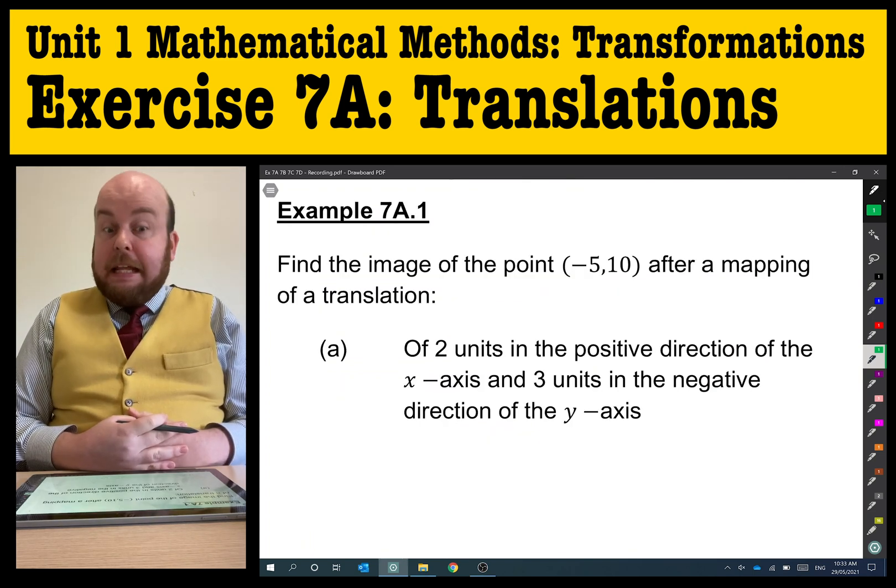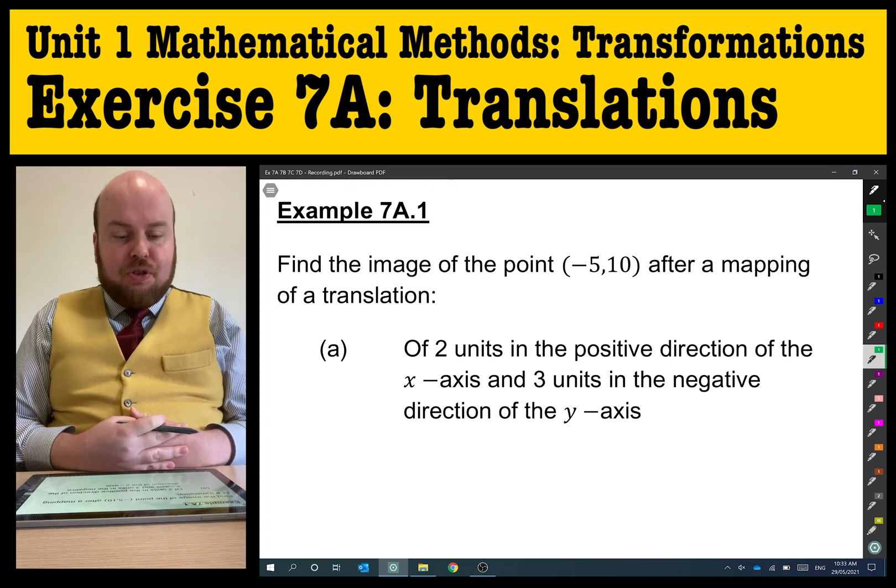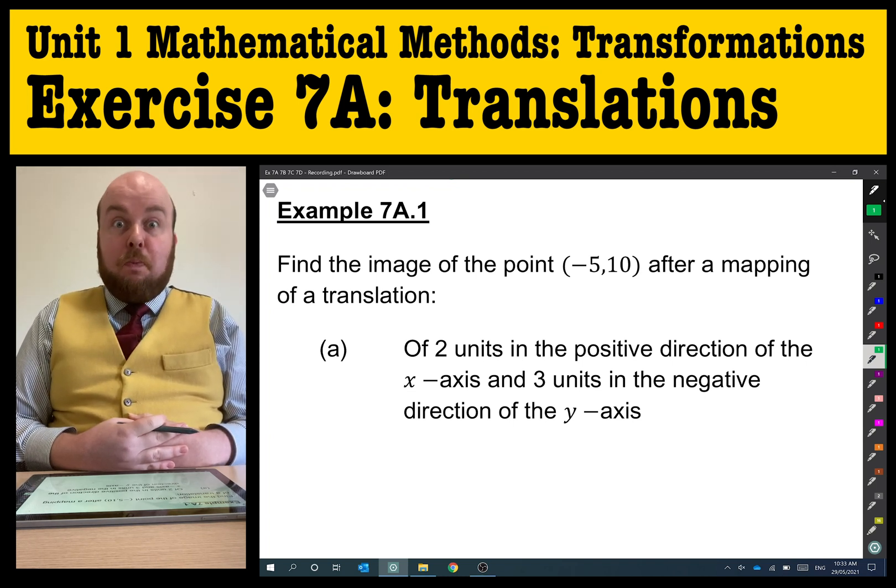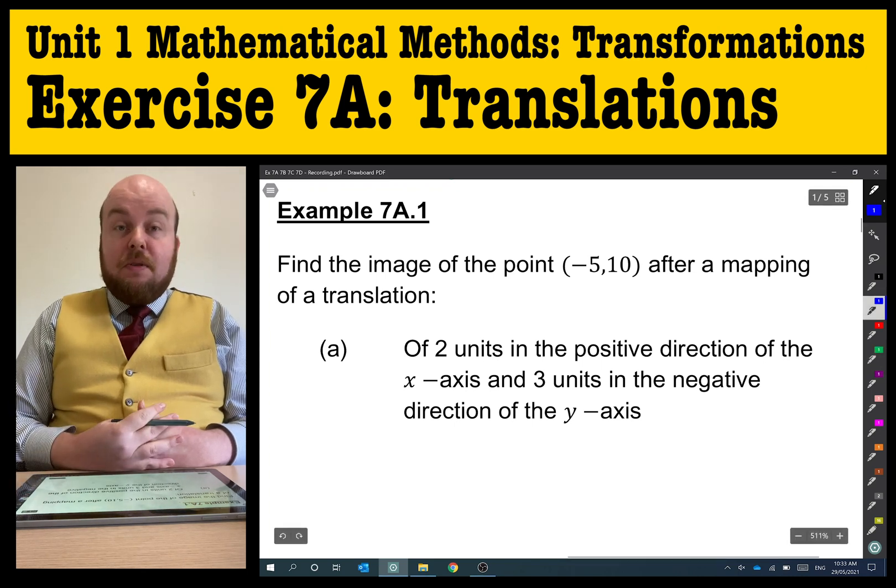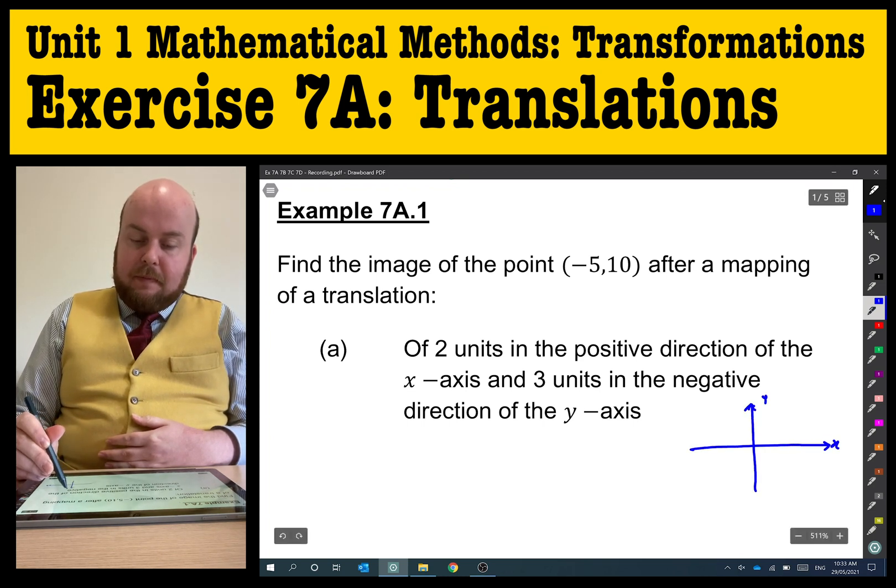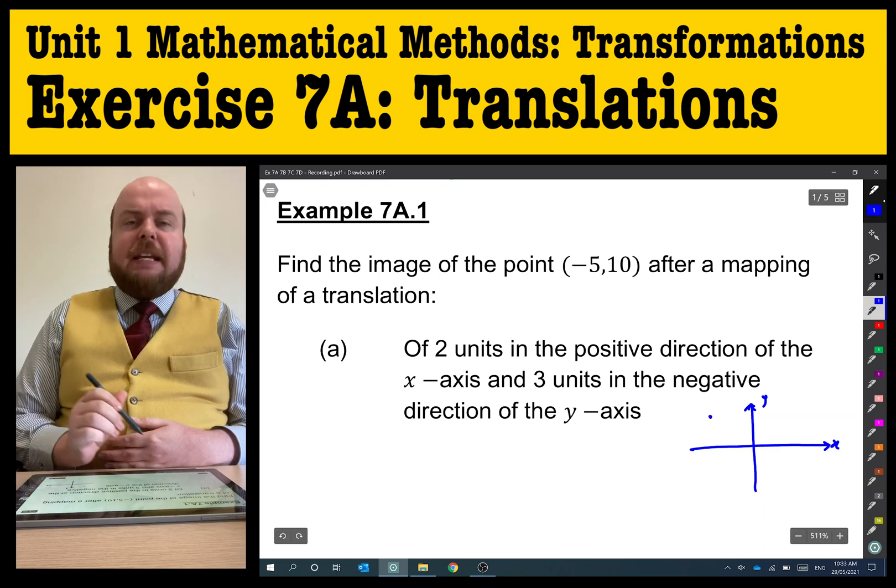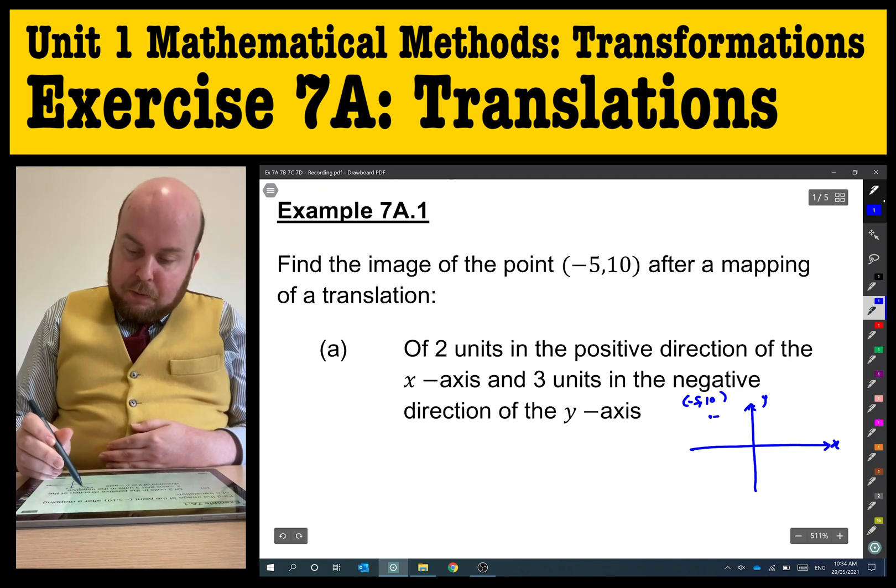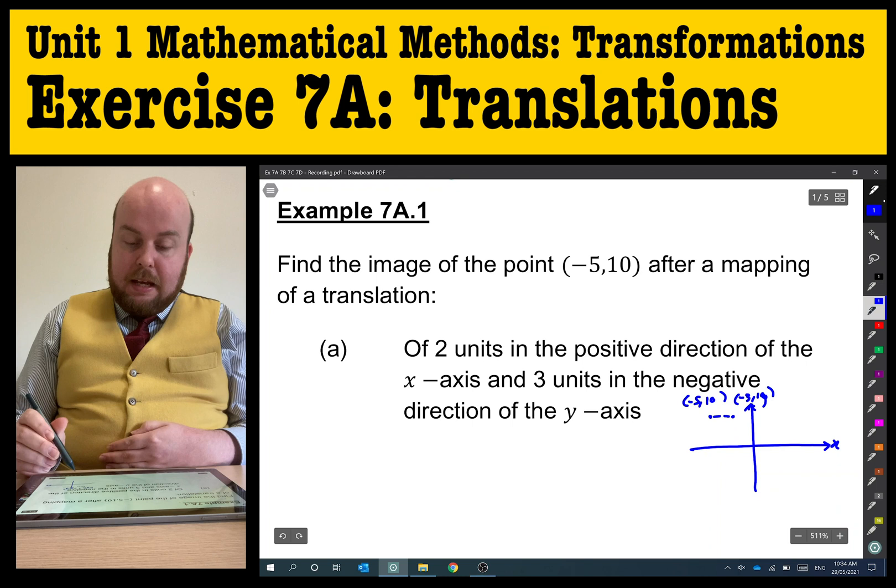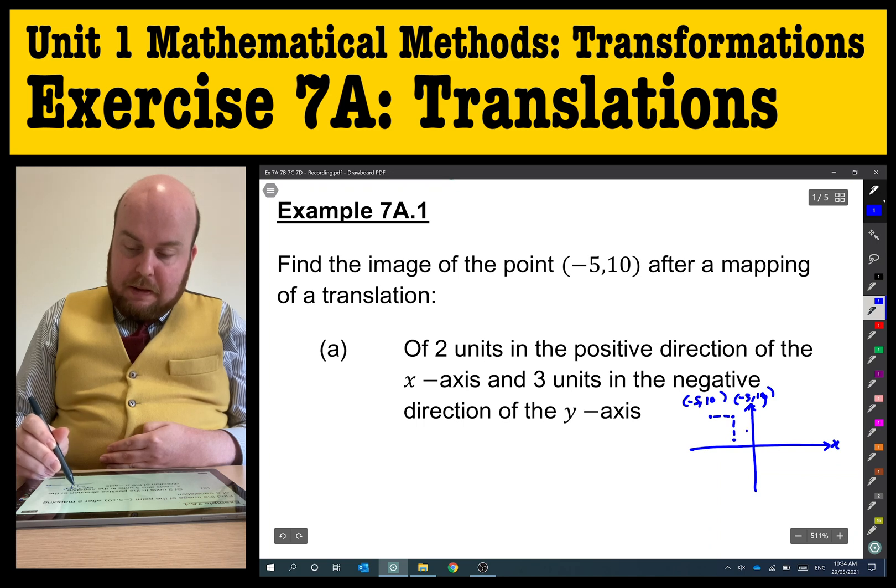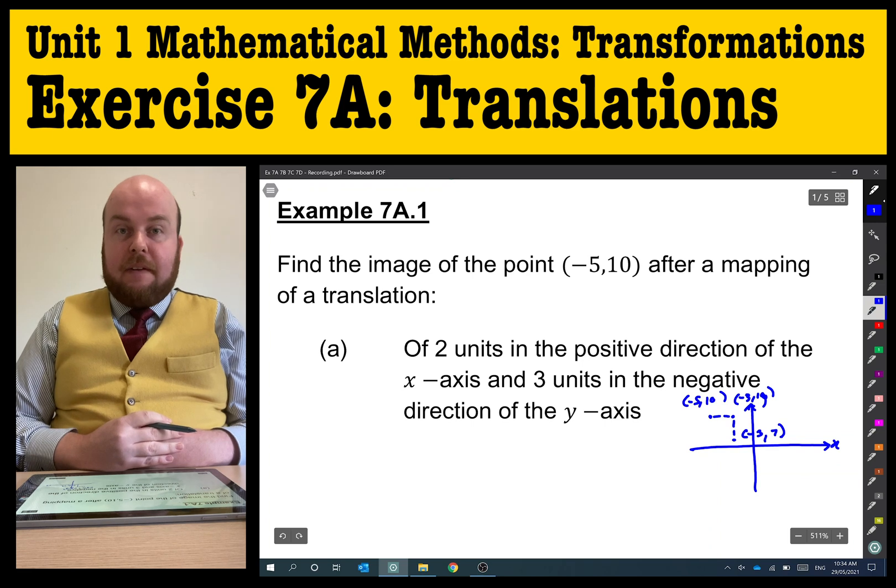Example 7a.1. Find the image of the point (-5,10) after a mapping of a translation of two units in the positive direction of the x-axis and three units in the negative direction of the y-axis. You can do this visually by having a look if we put a set of coordinates in here. So (-5,10), that's going to be about here. Two units in the positive direction of the x-axis, we're going to go 1, 2. So that's going to be at (-3,10). Then three units in the negative direction of the y-axis, 1, 2, 3. And there we go. So we get (-3,7) as our final answer.